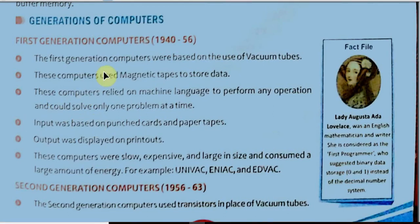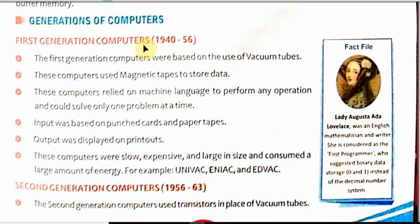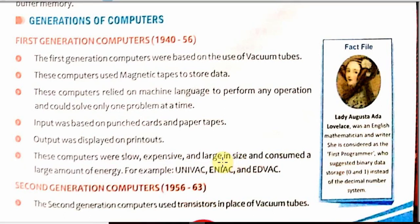Now we will see the generations of computers. The first generation of computers was during 1940 to 1956. These computers used vacuum tubes and magnetic tapes. They relied on machine language and were able to solve only one problem at a time. Input was given on punch cards and paper tapes, and output was displayed on printouts. The computers were slow, very costly, very large in size, and consumed a lot of electric power.